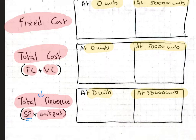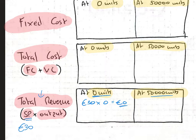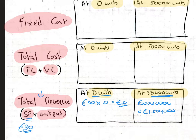Total revenue: selling price given in the question is €30, so we multiply that by our output. At zero units: 30 × 0 = €0. At our forecast output of 50,000 units: 30 × 50,000 = €1,500,000. So our two data points are: at zero output, revenue is €0; at 50,000 units output, revenue is €1.5 million. We'll now go and draw those on the graph.